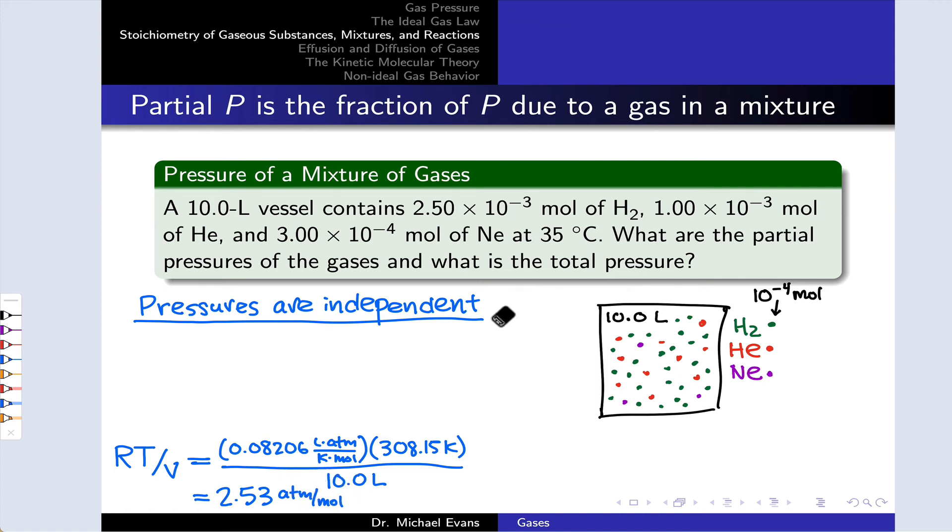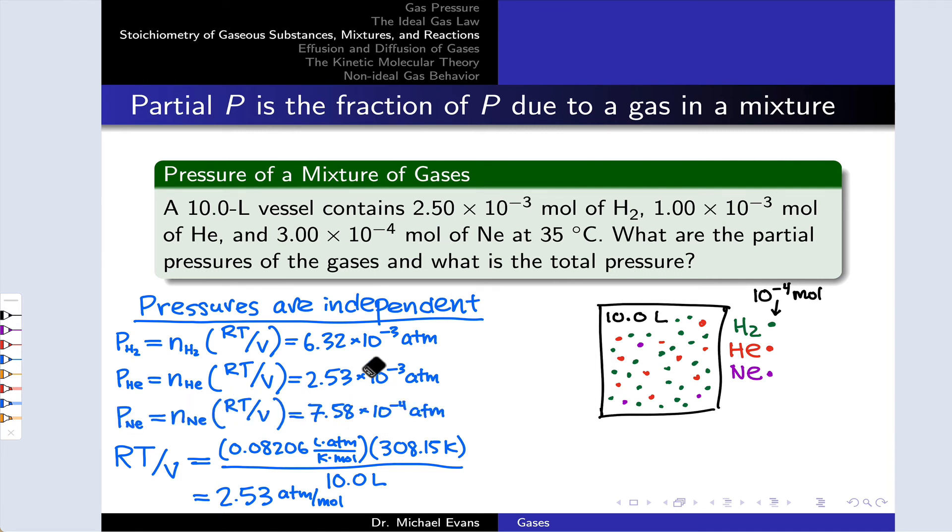All I have to do now is multiply by the number of moles of each gas to determine each partial pressure. So for H2, for example, it's that 2.5 × 10^-3 moles of H2 times RT over V. Do the same thing for helium and the same thing for neon.